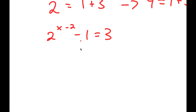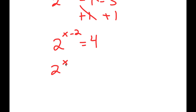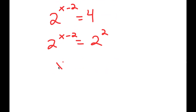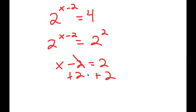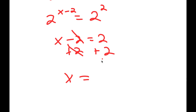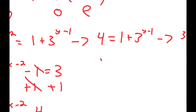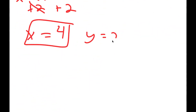From the odd parts: 2 to the power of x minus 2 minus 1 equals 3. Adding 1 to both sides gives 2 to the power of x minus 2 equals 4. Since 4 equals 2 squared, I have 2 to the power of x minus 2 equals 2 squared, meaning x minus 2 equals 2. Adding 2 to both sides gives x equals 4. So my solution is x equals 4 and y equals 2.